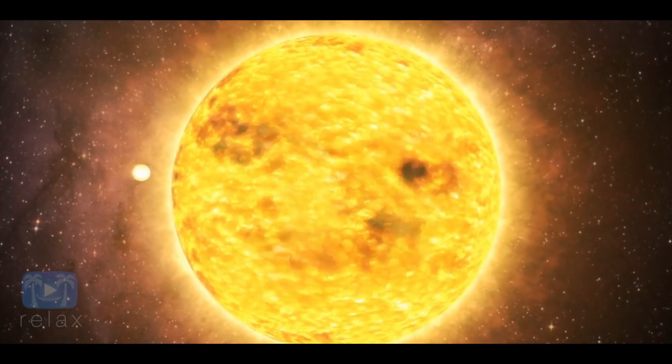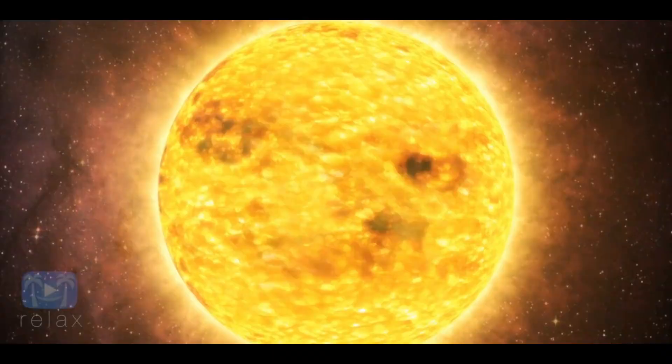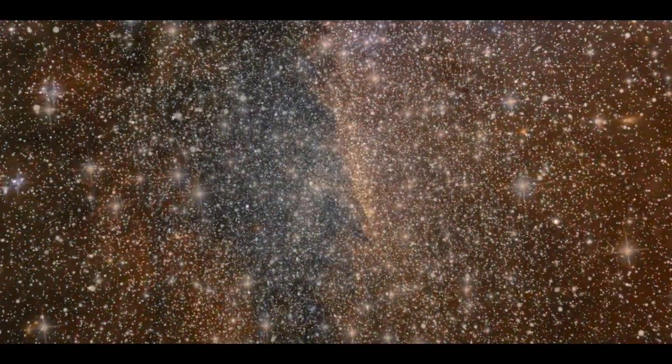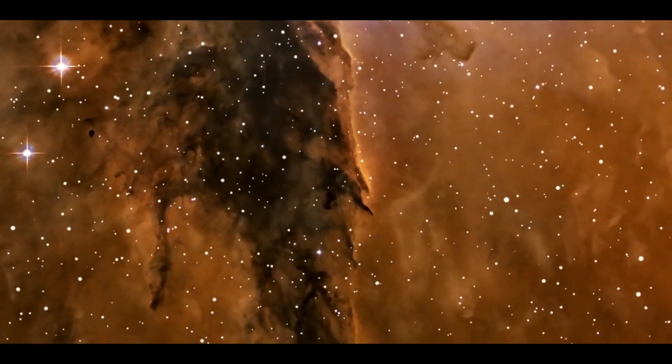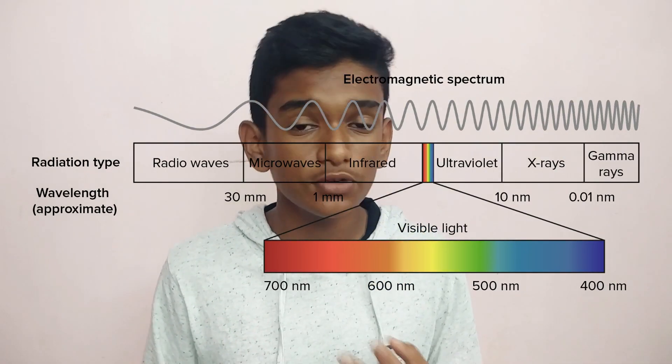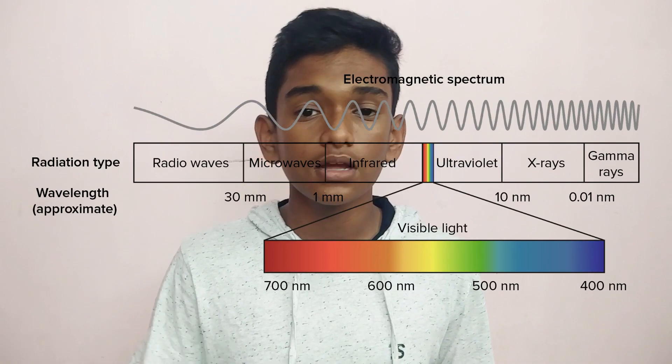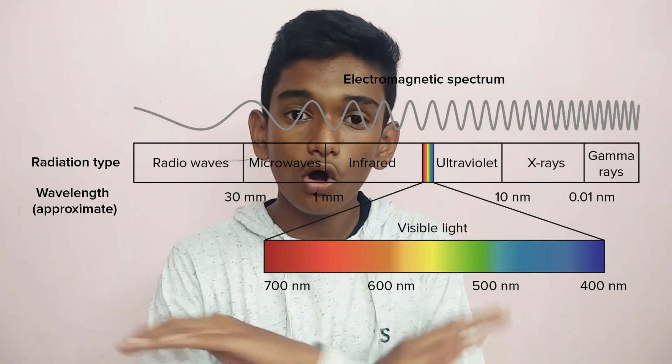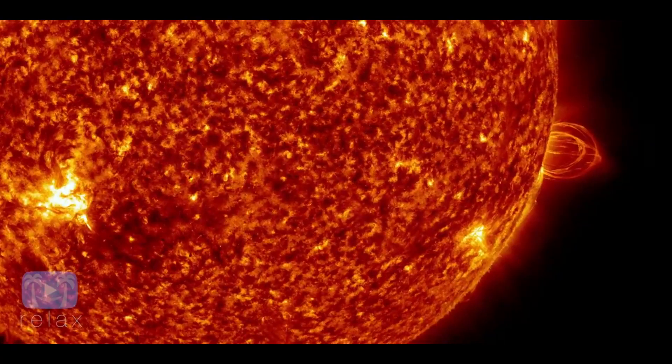We get energy from the photons emitted by the Sun. Light is made up of photons, which are elementary particles. Everything in the universe can emit photons — light — except dark matter and dark energy. Photons are electromagnetic waves separated across the electromagnetic spectrum: radio waves, infrared, microwaves, visible light, UV rays, X-rays, and gamma rays.